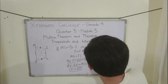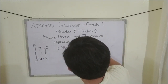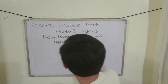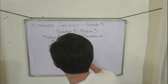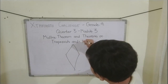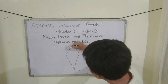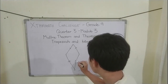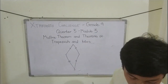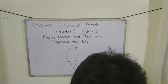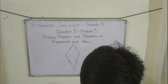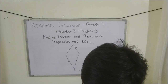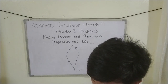What if we have a problem about a kite? In a kite, this side is congruent to this side, and this side is also congruent to this side. The problem states: the perimeter of a kite is 72 centimeters. The length of one of its sides is 24 centimeters more than half the length of another. Find the length of each side.